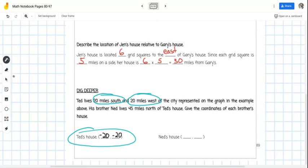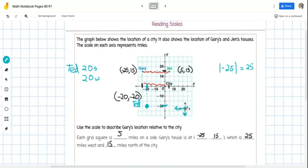And we still have one more problem to answer here. His brother Ned, Ned Flanders perhaps, lives 45 miles north of Ted's house. Give the coordinates of each brother's house. Well, we already got Ted's house. Ned lives 45 miles north of Ted's house. So let's get this circled so that we have that ready to go. 45 miles north of Ted's house. Well, looking at the compass rose, north is up on the y-axis. So I need to go 45 miles north from Ted's house. Remember each line is five. So let's count this out. Let's see if we can figure out where Ned's location is on the map. I'm going to create some space and let's find that out.